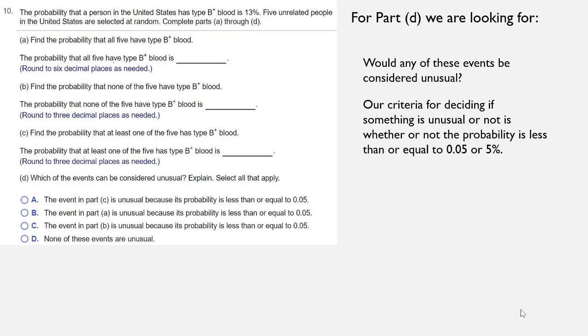B and C were far larger than 0.05, but the one in part A was only 0.000037, which is way less than 0.05. So that makes it unusual.